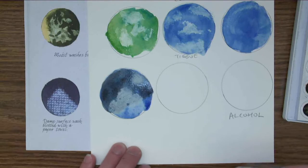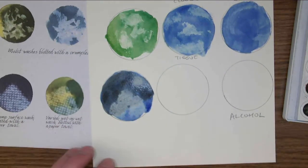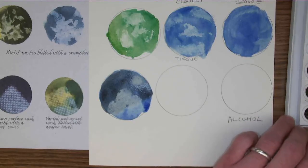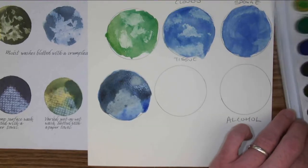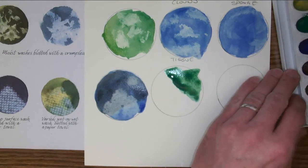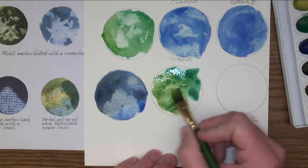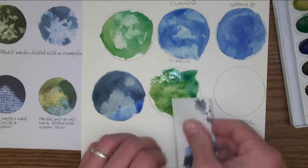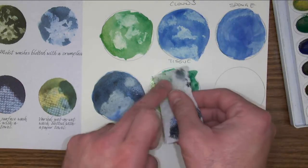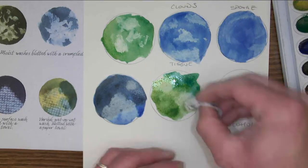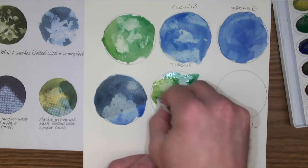Varied wash, pretty much the same thing. You're dealing with a couple different colors in the wash. Dry surface again. I'll use my paper towel. Maybe I want to crumple it a little bit and get some similar effects to the tissue.